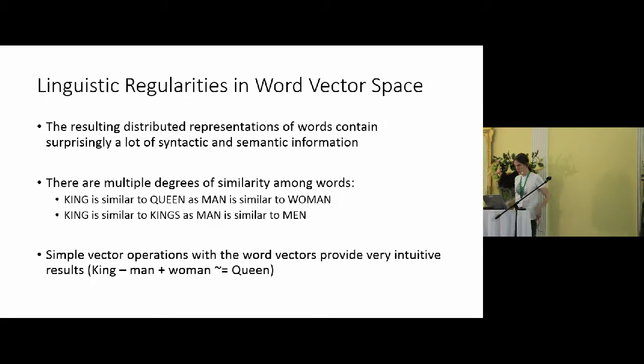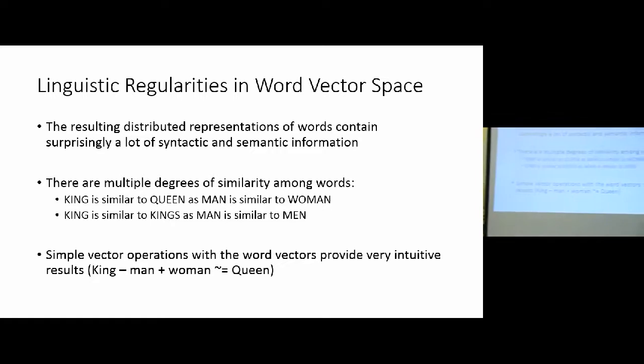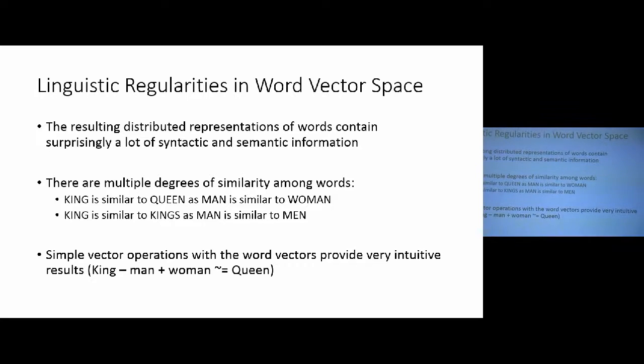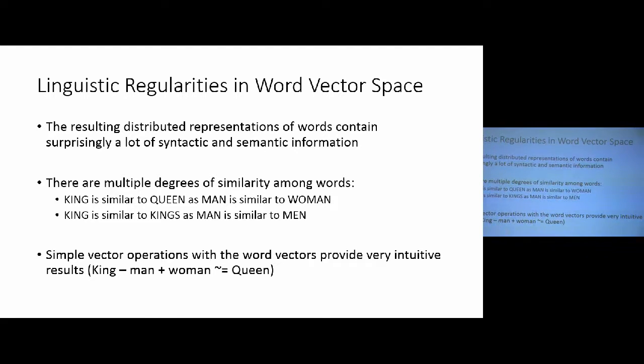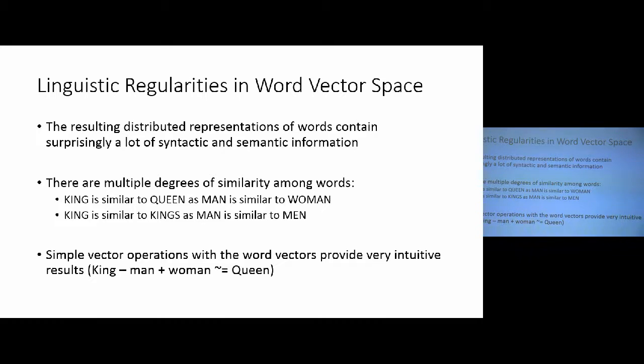The resulting representations actually contain surprisingly a lot of syntactic and semantic information. I'm saying surprisingly because I didn't know for a long time that one can get these simple regularities, but people can actually try it out themselves, and it's obvious that the regularities are very, very precise in some cases, more than one would expect. For example, here I have the example like king minus man vector plus the woman vector gives approximately the vector for queen, which was the famous example that many people did think that it was just handpicked and just some lucky result, but it wasn't actually the case.